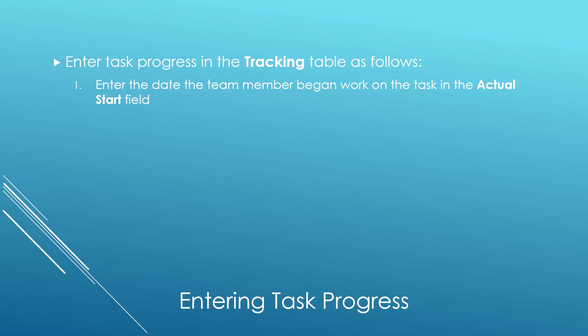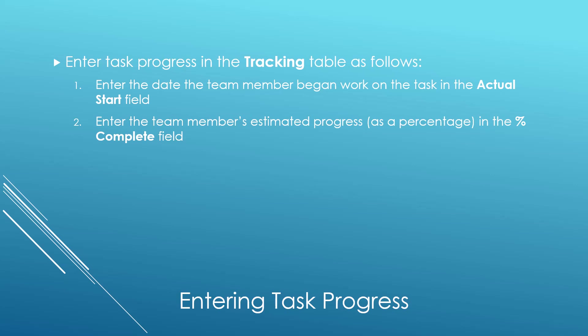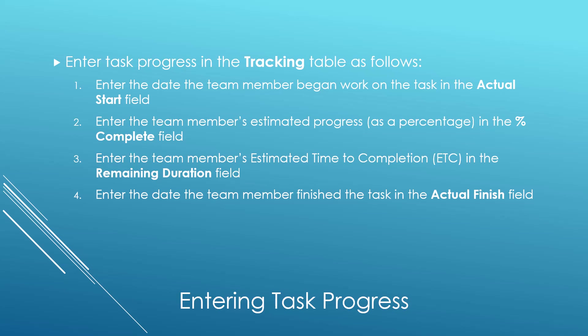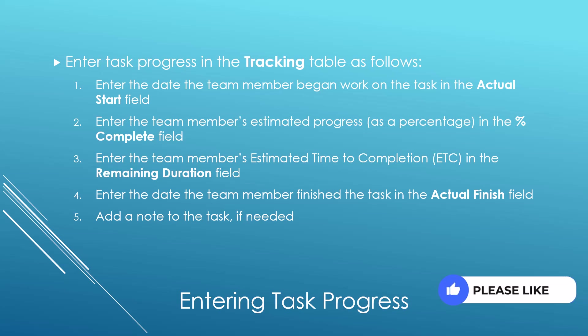Then, enter task progress in the Tracking table on a weekly or bi-weekly basis using the following process. Enter the date the team member actually began work on the task in the Actual Start field. Enter the team member's estimated progress as a percentage in the Percent Complete field. Enter the team member's estimated time to completion, or ETC, in the Remaining Duration field. Finally, enter the date the team member actually finished the task in the Actual Finish field. If you need to provide any additional documentation about the task update, add a note to the task.